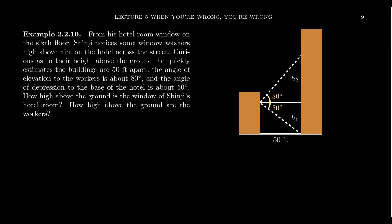Okay, so you can see that with our diagram, there's going to be two right triangles coming into play right here because we can assume that these buildings are perpendicular to the ground. The first right triangle is going to be based upon Shinji's angle of elevation. So we estimate the angle of elevation was 80 degrees.